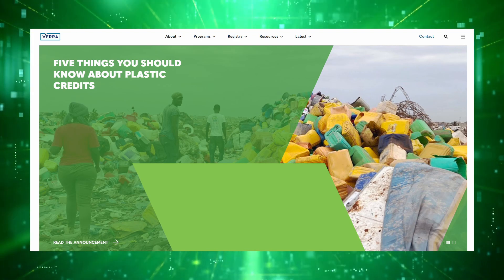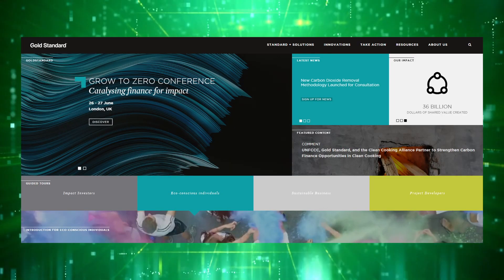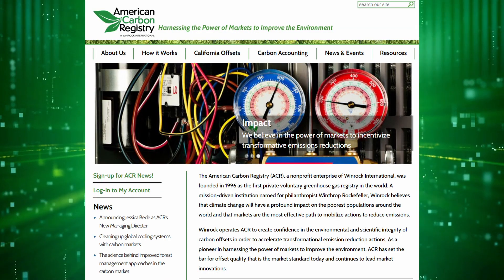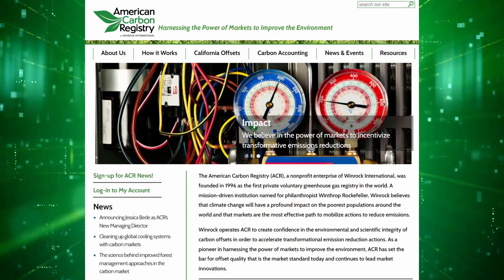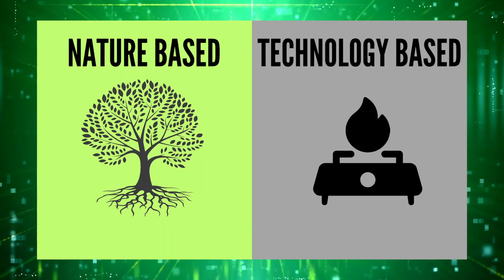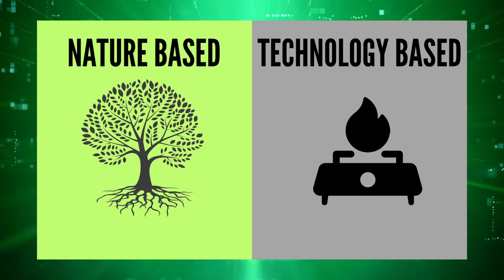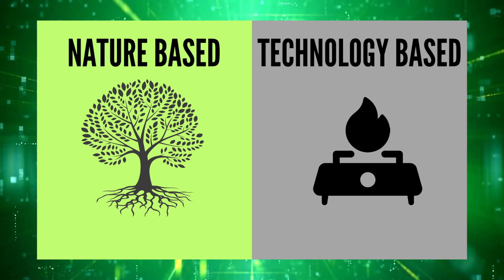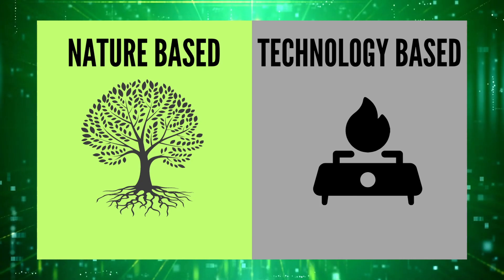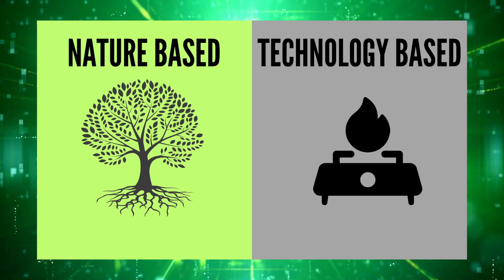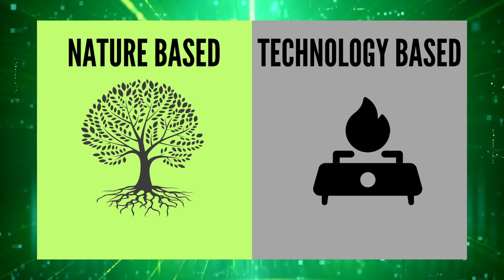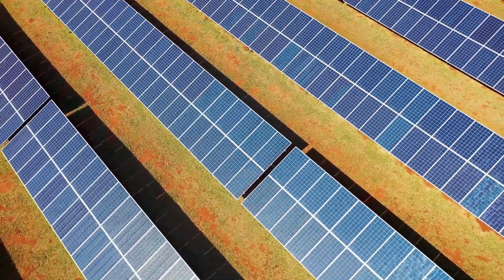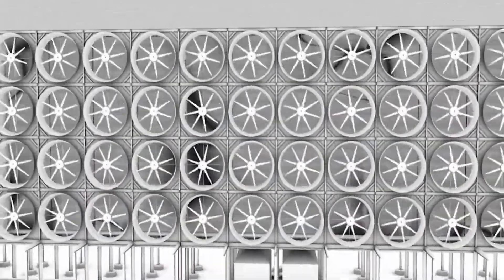We're covering Verra, Gold Standard, and the American Carbon Registry — most of the possible carbon projects you'll see in the voluntary carbon markets. Carbon projects can be broadly separated into two categories: nature-based, which involves animals or plants, and technology-based, which refers to industrial processes or the implementation of various technologies.